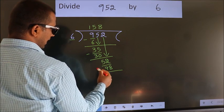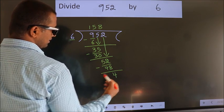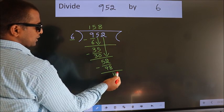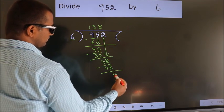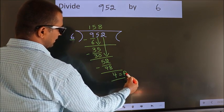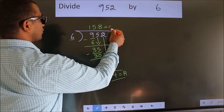Now we subtract. We get 4. No more numbers to bring down, so we stop here. This is our remainder. This is our quotient.